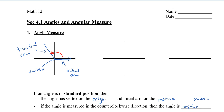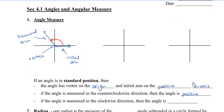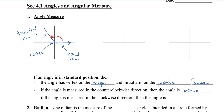Now, if the angle is measured in the clockwise direction, then the angle is negative. So, angles can be measured counterclockwise and also clockwise in this direction.